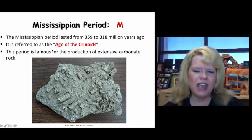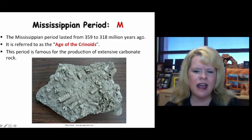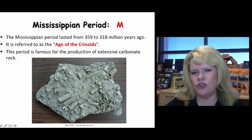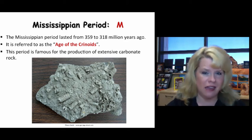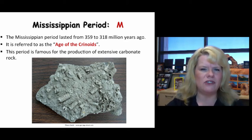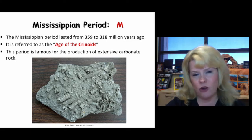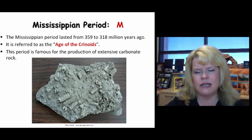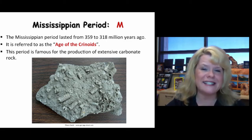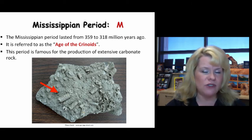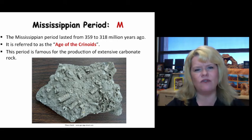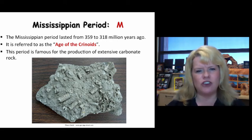If you take a look at these crinoid stems, look at how littered that rock is full of them. In many cases, Mississippian carbonates are so full of crinoid fragments that it looks clastic — it looks more like a sandstone. So that's why the age of the crinoids is very suiting and fitting for this geologic period.